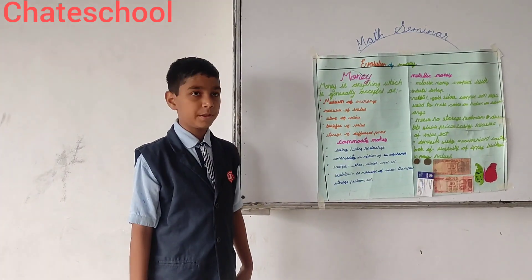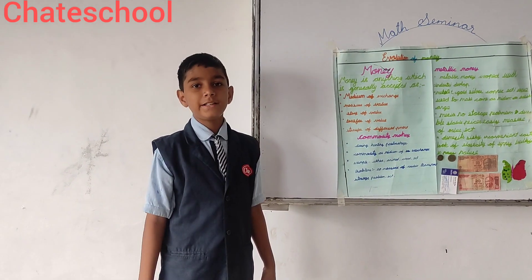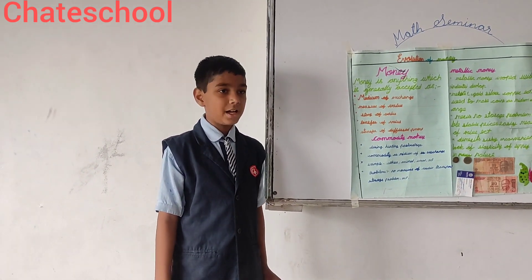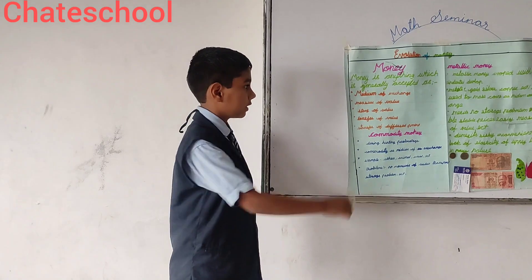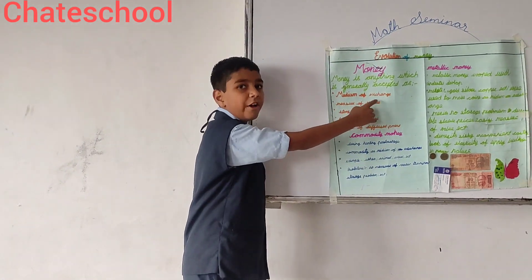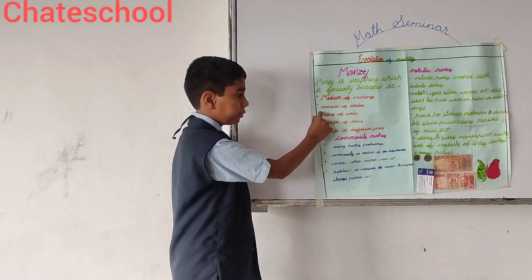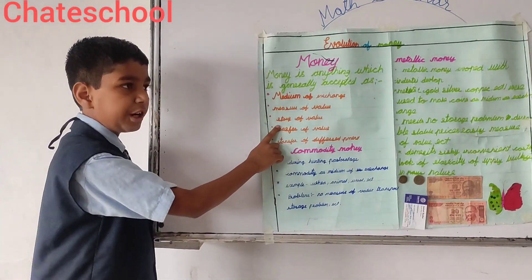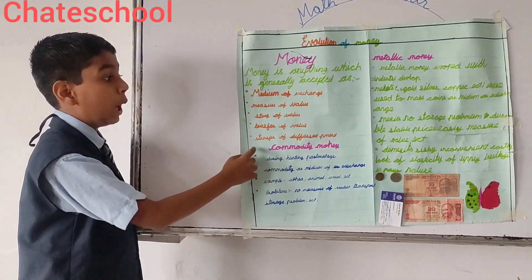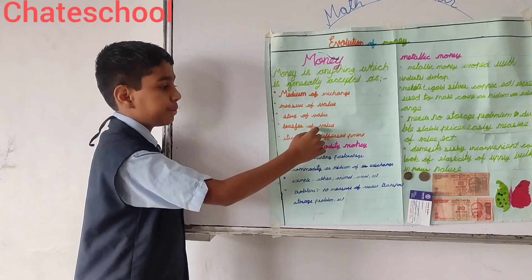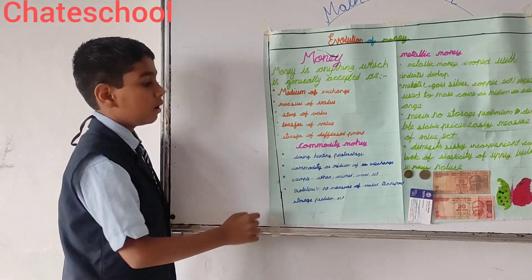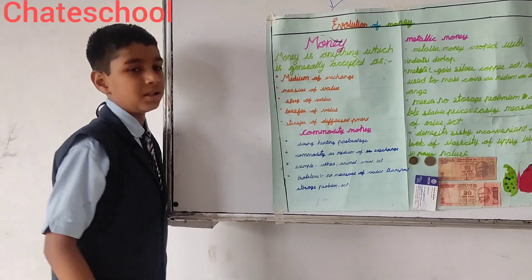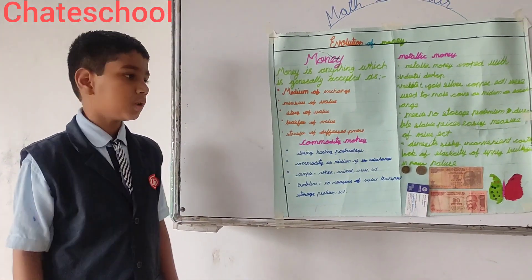First topic is money. Money is anything which is generally accepted as: point number one, medium of exchange; point number two, measure of value; point number three, store of value; point number four, transfer of value; point number five, transfer of deferred payment.